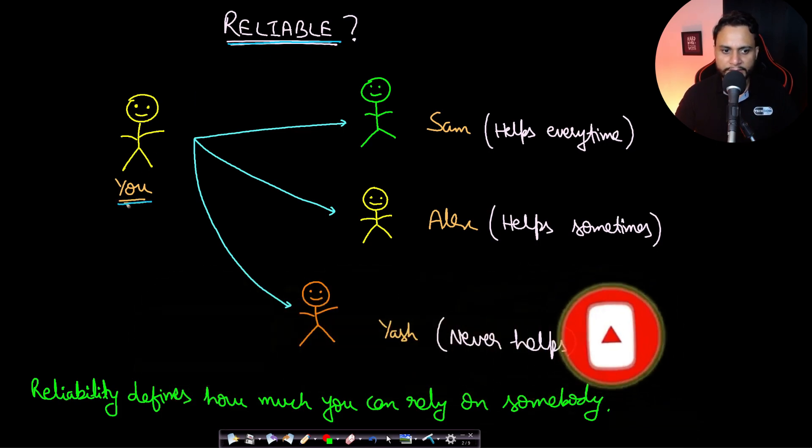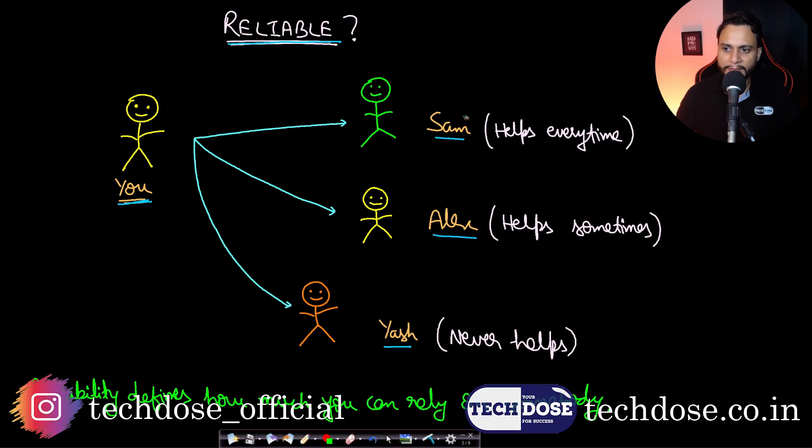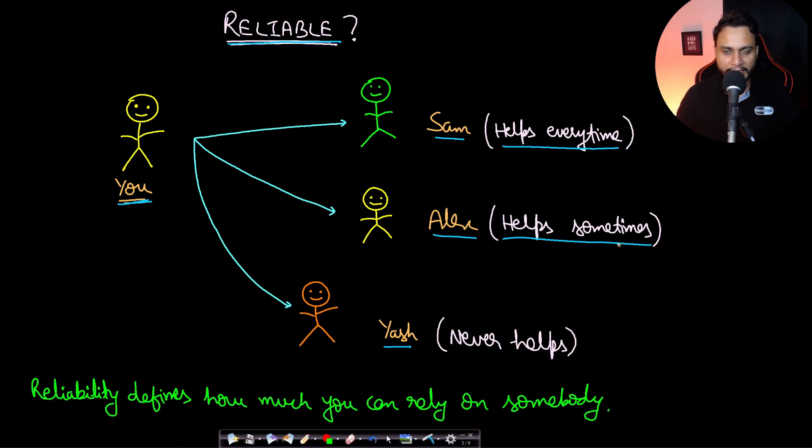Let's say that you are present and you have three persons as friends: Sam, Alex, and Yash. Whenever you are in need, Sam always helps you, so he will help you every time you are in need. Alex will help you sometimes and decline sometimes, and as for Yash, he never helps you whenever you are in need, but you call these three guys your friends.